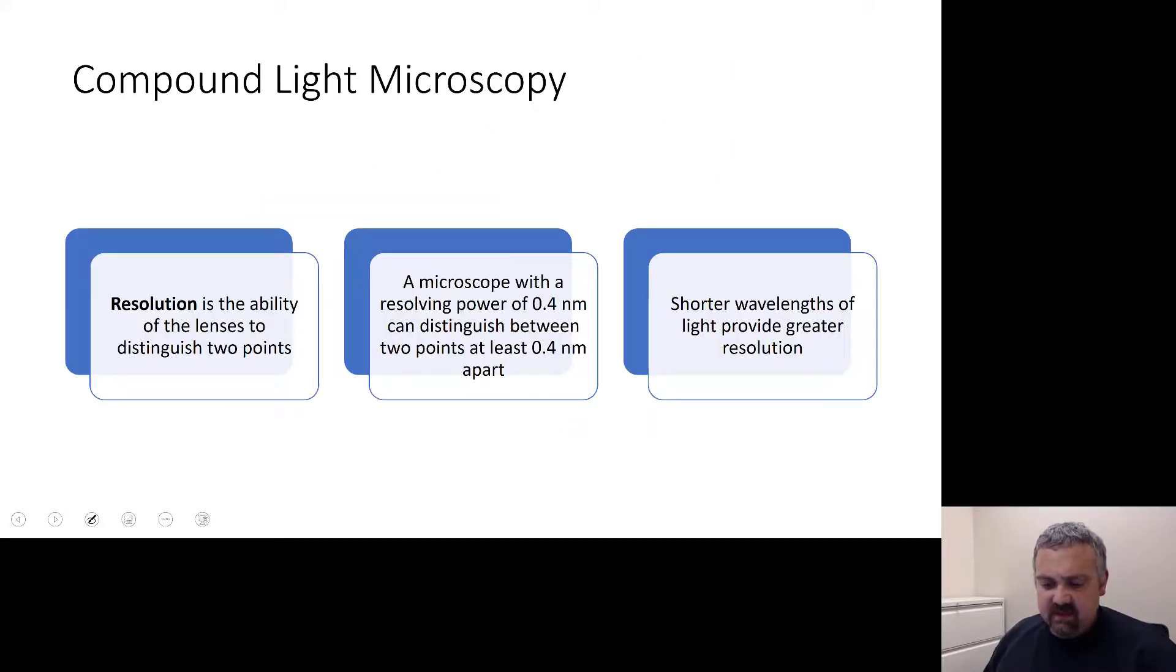So let's talk about resolution. Who cares how high a magnification you can get if it doesn't look good, if it doesn't look clear. So resolution really is the key term when you look at microscopes because that's what determines the magnification. The resolution is the ability of the lens to distinguish between two points.